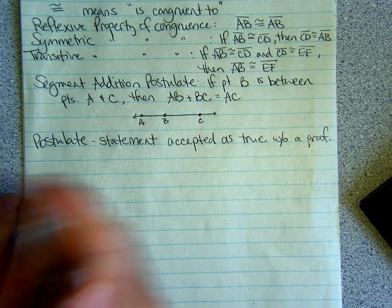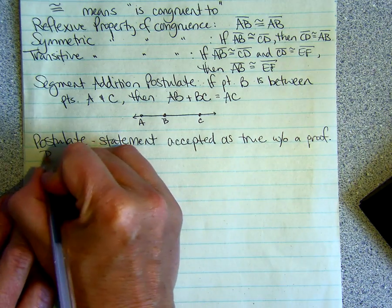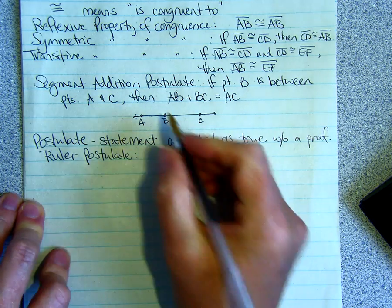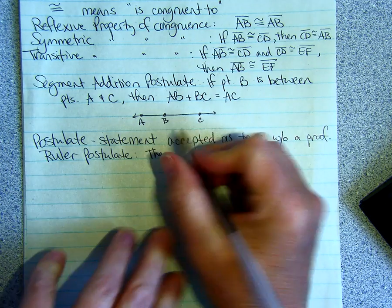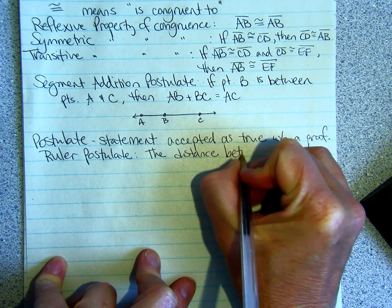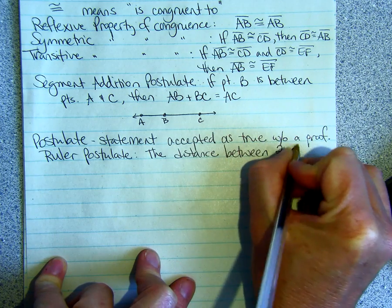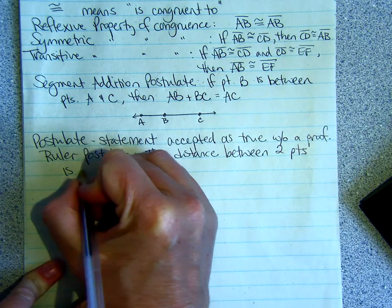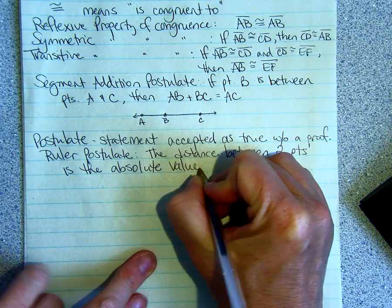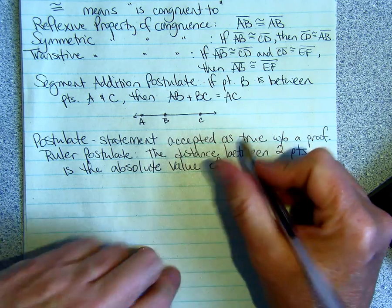So another postulate is called the ruler postulate. And that just says the distance between two points is the absolute value of the difference of their coordinates.